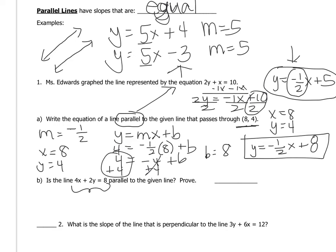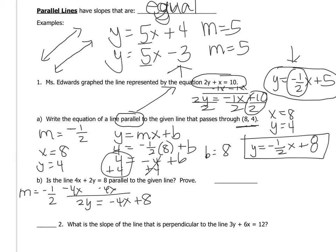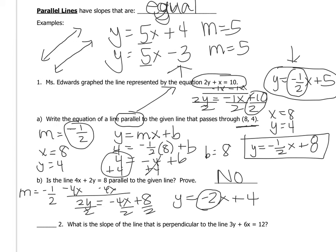Now, is this other line parallel to the given line? For it to be parallel it must have the same slope of -½. Getting y by itself: subtract 4x from both sides to get 2y = -4x + 8, then divide by 2 to get y = -2x + 4. The slope here is -2, which is not the same as -½, so the answer is no — it is not parallel.